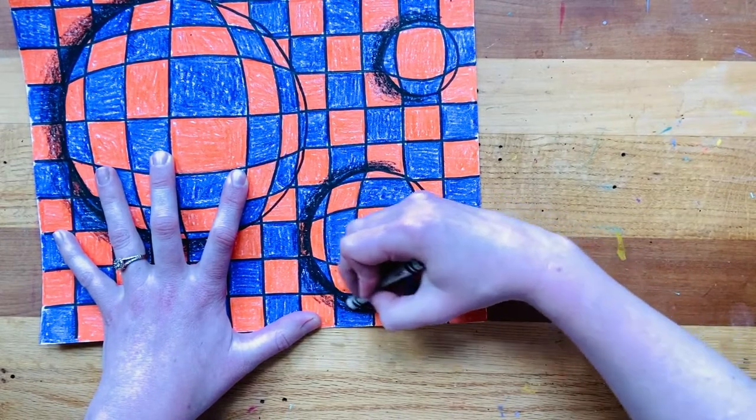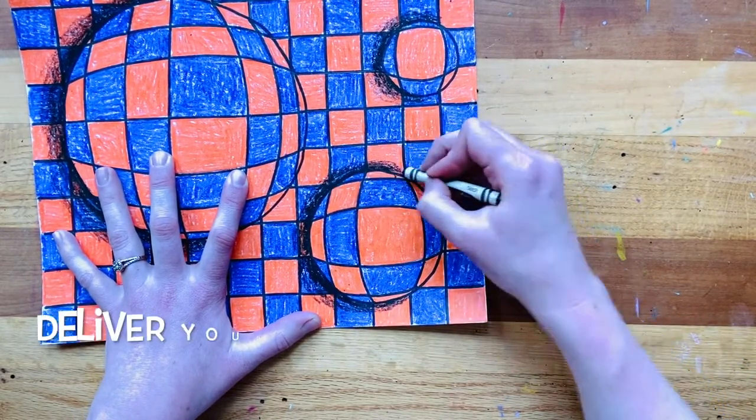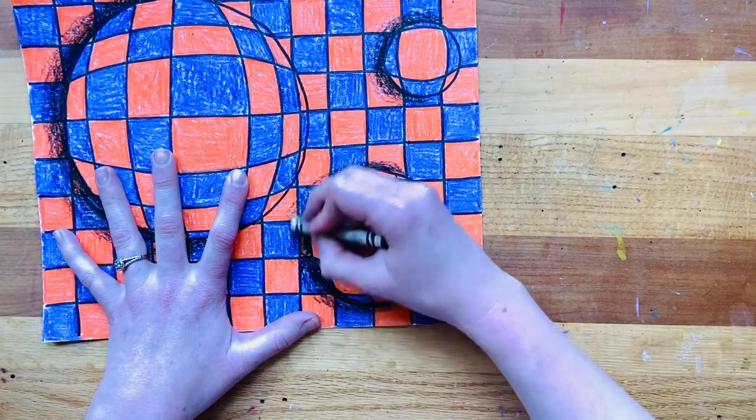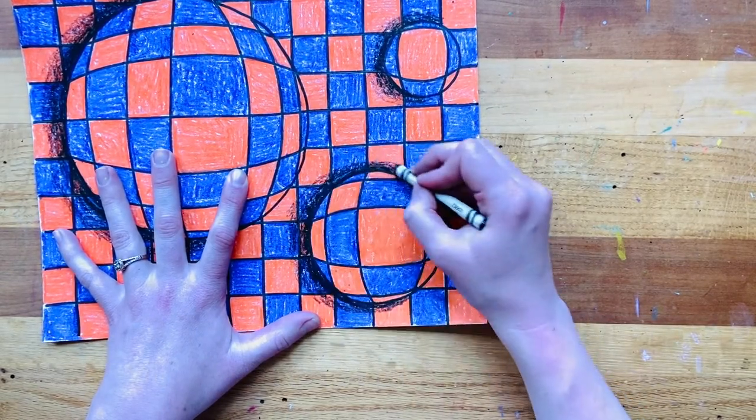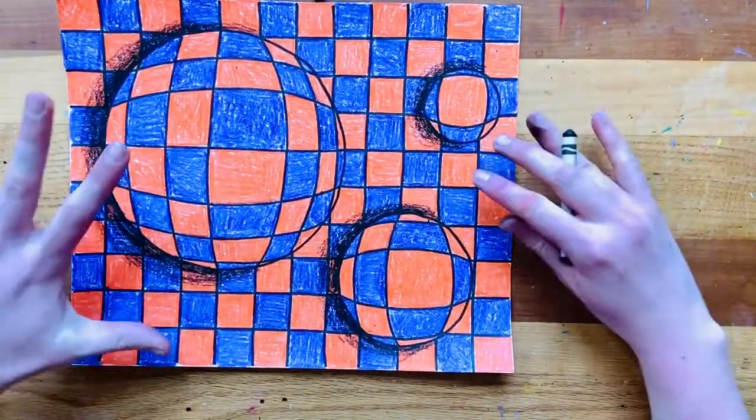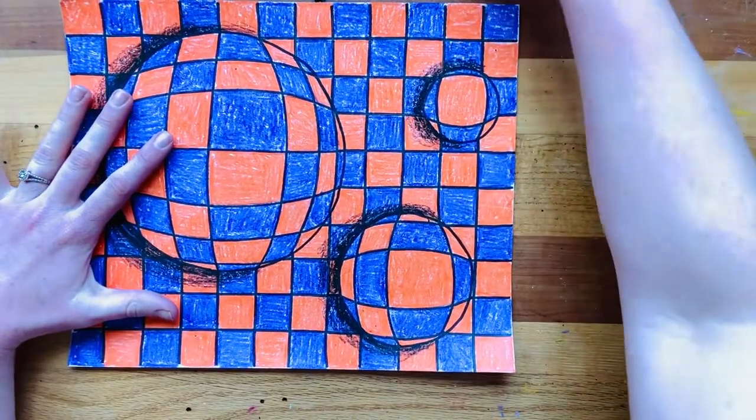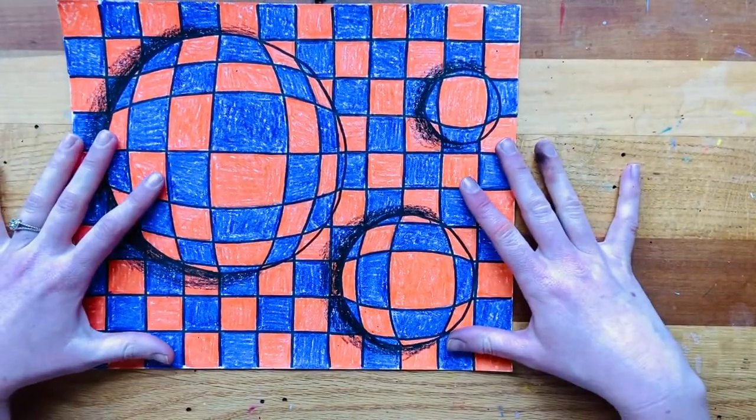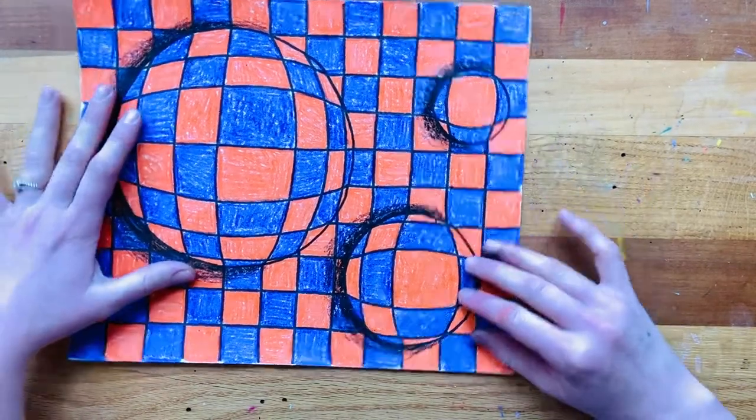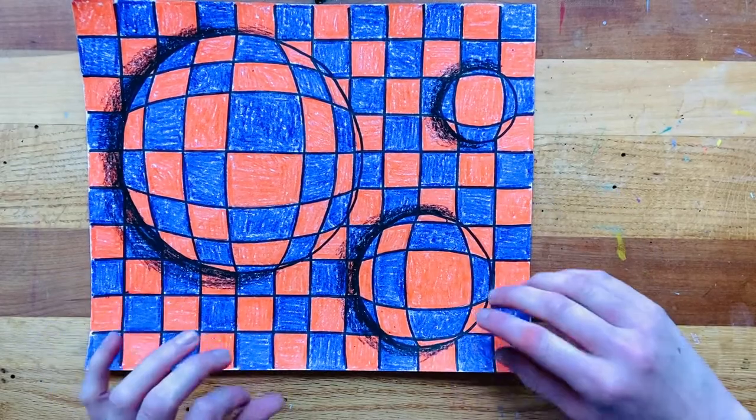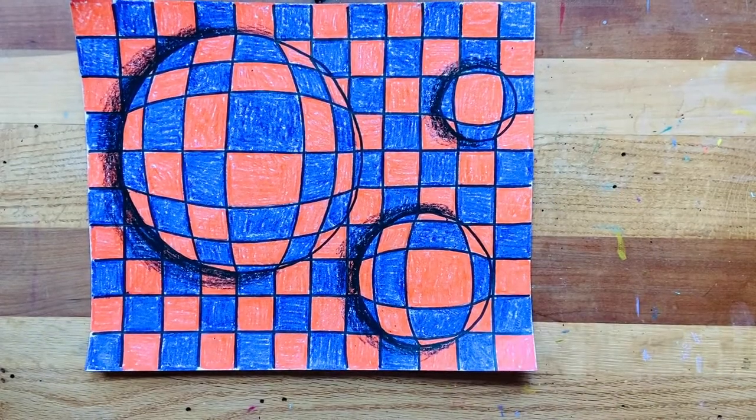So for the art show, you'll need to return this artwork back to the school office at the latest on May 16th. But you can do that before it too. So just make sure that your name is on the back. You can put your grade on the back too. Then you can deliver this to the front office and I will display them on our big art panel for the art show on May 26th. So my friends, I hope you had fun creating your optical illusion. And I'll see you and your artwork pretty soon. Bye.